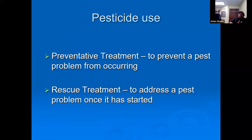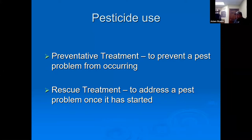Pesticides can be used two different ways. There's preventive treatment, which prevents a pest problem from occurring — you put it down ahead of time before there's a problem. Or there's a rescue treatment, where the problem has already occurred, the pest is there, and now you have to eradicate it.